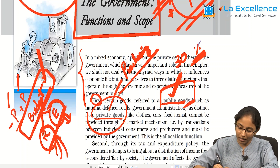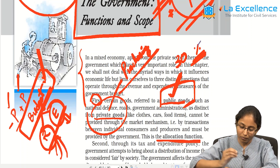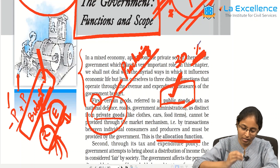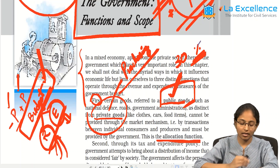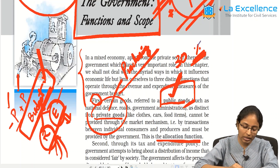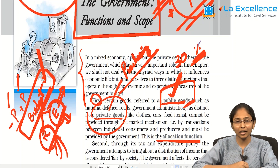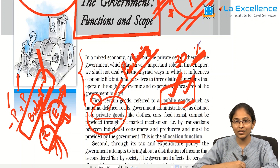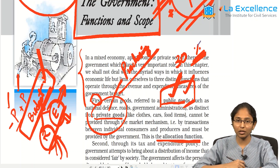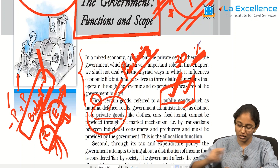In the budget, we allocate money — which purpose gets what allocation. On the expenditure side, we allocate money to create public goods and services. So that is one of the important functions of budget.